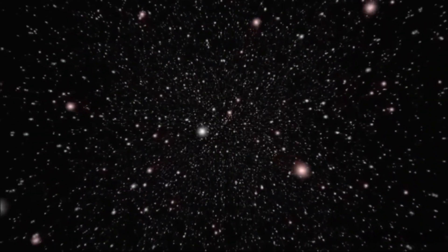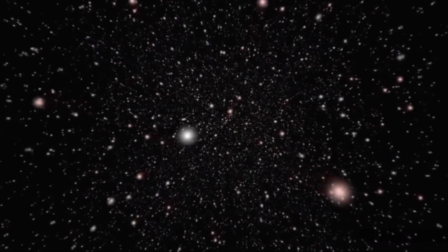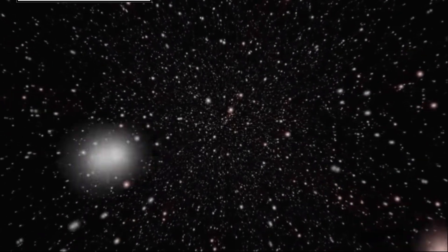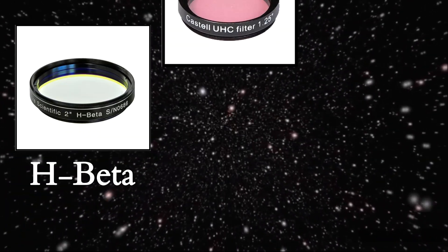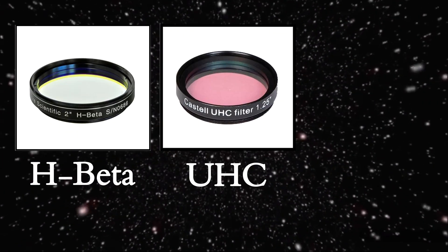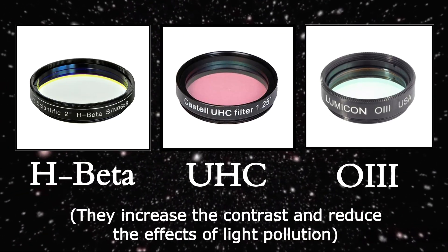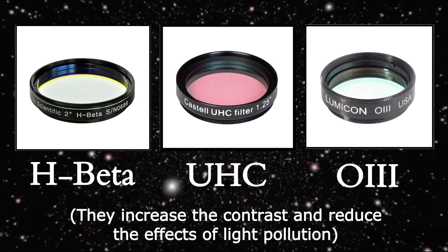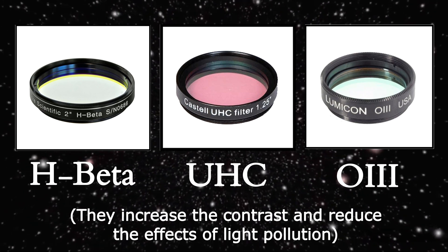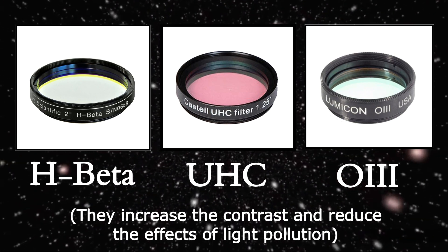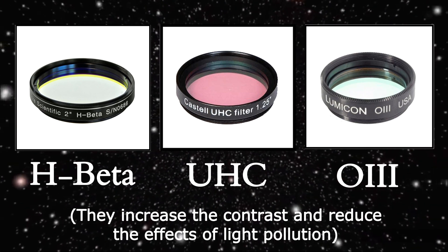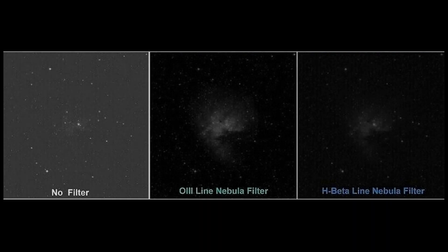Also, if you have them, don't forget to use H-beta, UHC, or OIII filters. These filters will help you to see deep sky objects that were not visible before and will show you a large number of new details.